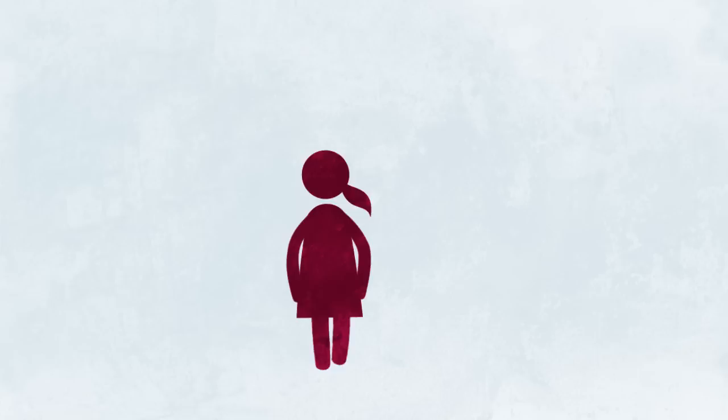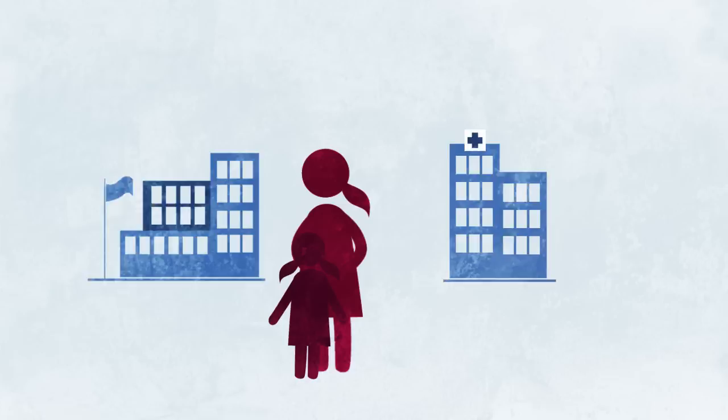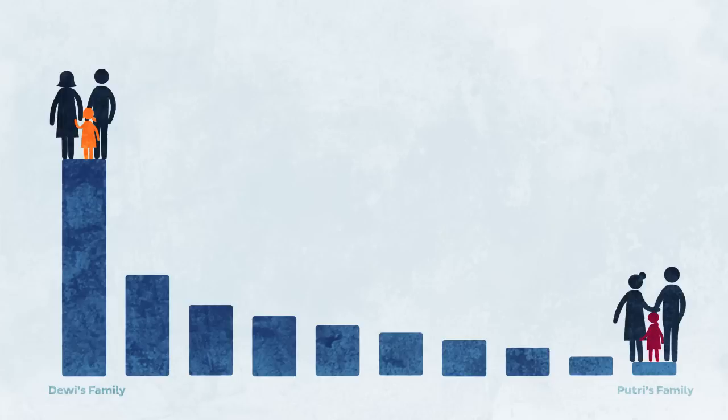Without a good job, Putri won't be able to afford health care or make sure that her children stay in school. And so, poverty and inequality get passed on from generation to generation.